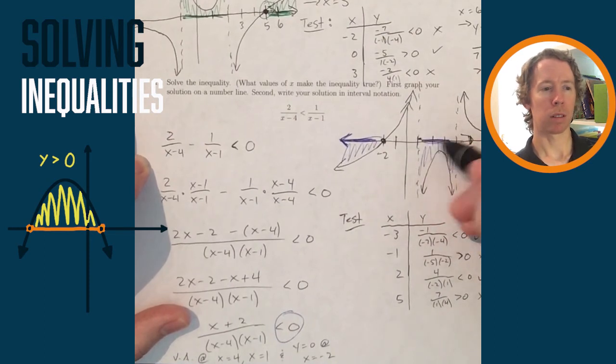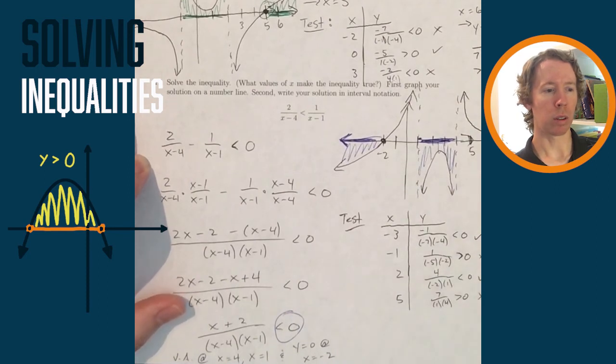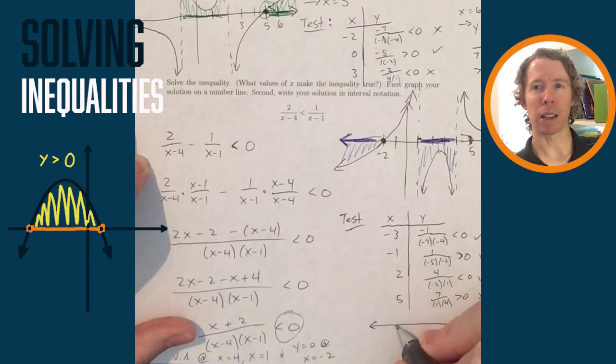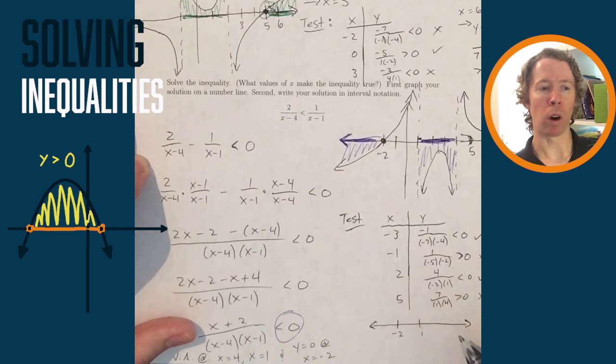So I'll make a number line where I don't include negative 2 or 1 or 4, because I want to know where y is strictly less than 0. If it said less than or equal to 0, then I would include negative 2. But I would still throw out 1 and 4.